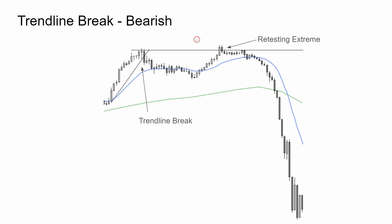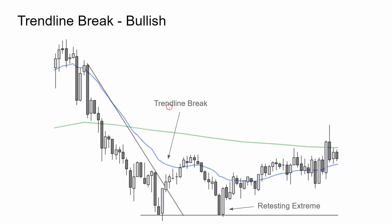Trend line break — bearish example. Here we have a bull trend and then it breaks. This goes range bound and then we get a test of the previous swing high and the market dumps — trend line break.